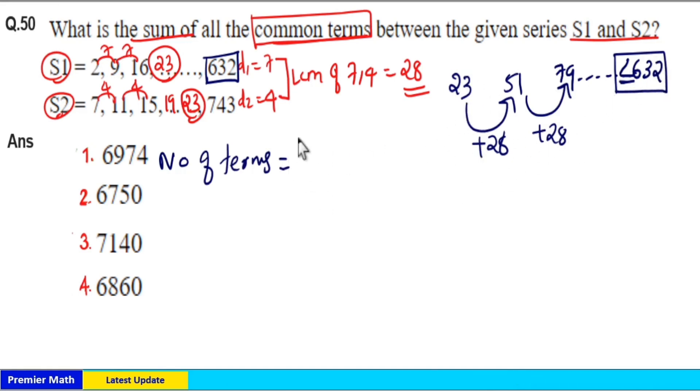In that case, last term minus first term divided by common difference plus 1 is the total number of terms. Now this is equal to 632 minus 23. 28 goes 2 times in 60 remaining 49, 28 goes 1 time in 49. We can ignore the decimal point. So 21 plus 1 equals 22, the total number of terms in this common term series.